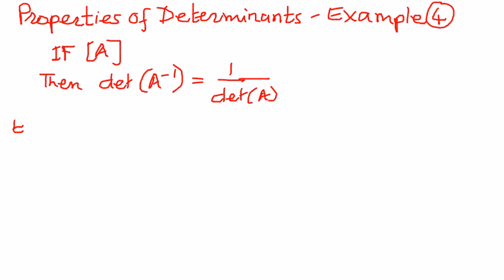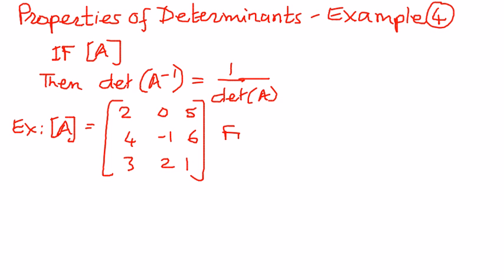Let's say we have matrix A and the elements of this matrix A are as follows: 2, 0, 5; then 4, -1, 6; then 3, 2, 1. If this is the matrix we have, we want to find the determinant of the inverse of this matrix.